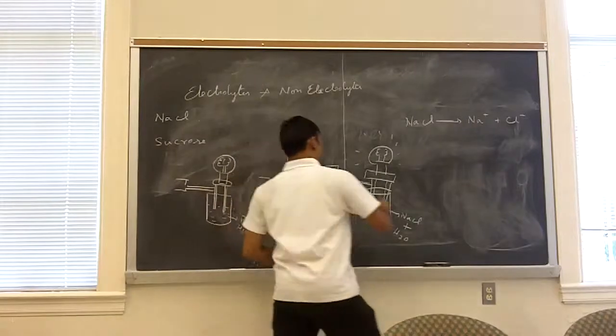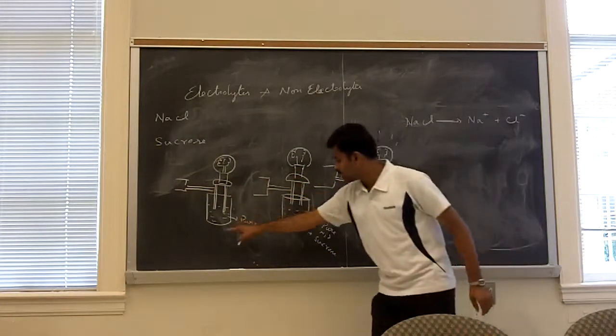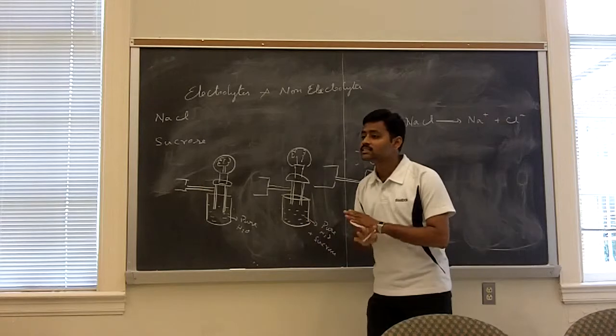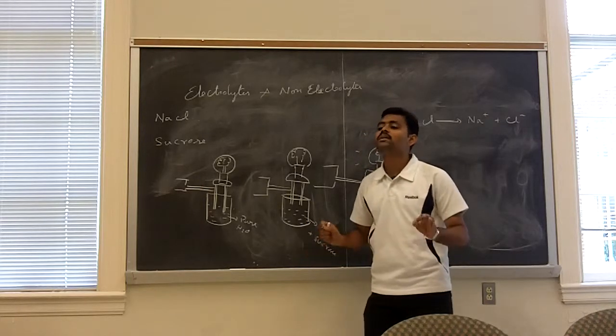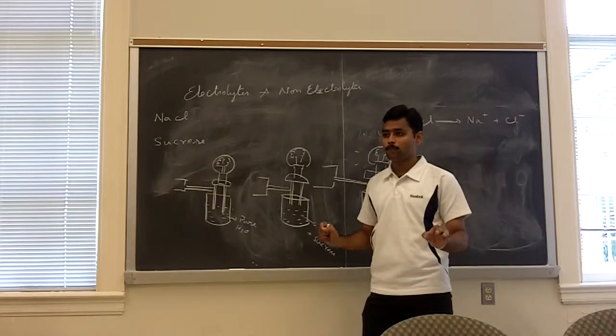Ions are nothing but it can be an atom or a group of atoms that possess an electrical charge. Or the charge may be either way. It can be a positive charge or a negative charge. So here in case Na plus is a positive and Cl minus is a negative ion. Right. So what happens? In the first case, pure water does not dissociate at all. It remains as H2O. Pure water, I mean.